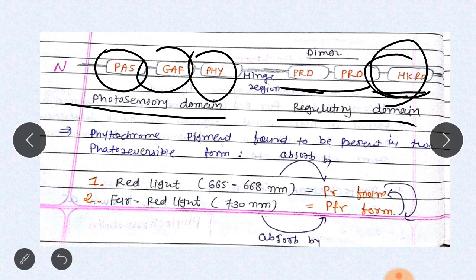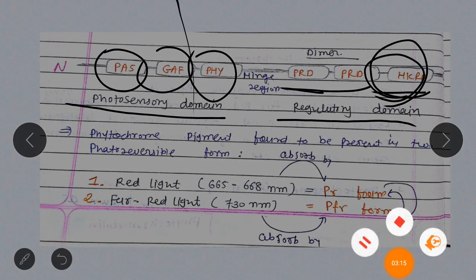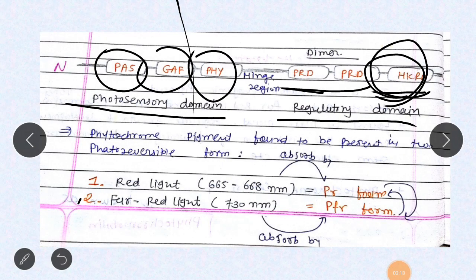Histidine kinase is present in phytochrome, similar to the histidine kinase receptor domain in ethylene signaling. Phytochrome pigment is found in two photo-reversible forms. The first form, Pr, absorbs red light, and the second form, Pfr, absorbs far-red light. When phytochrome receives red light, Pr is converted to Pfr form. When far-red light is present, the Pfr form is converted back into Pr form.